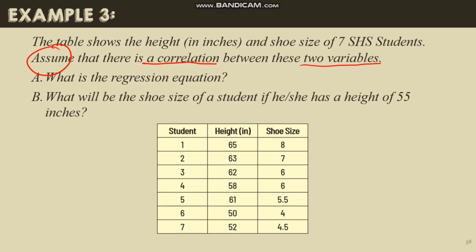We need to find the regression equation which is y equals a plus bx. And then using the equation, we'll find the shoe size of a student when they have a height of 55. This is the x and this is the y. So first, let's compute a and b to get this prediction for letter b.